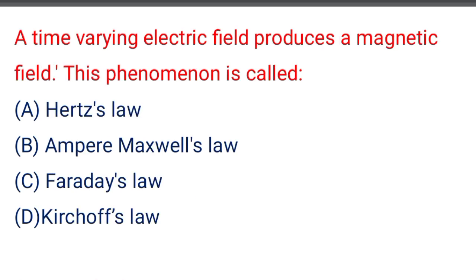Next question: a time-varying electric field produces a magnetic field. The phenomenon is called — option A: Hertz law, option B: Ampere-Maxwell law, option C: Faraday's law, option D: Kirchhoff's law. The correct answer is option B: Ampere-Maxwell law.